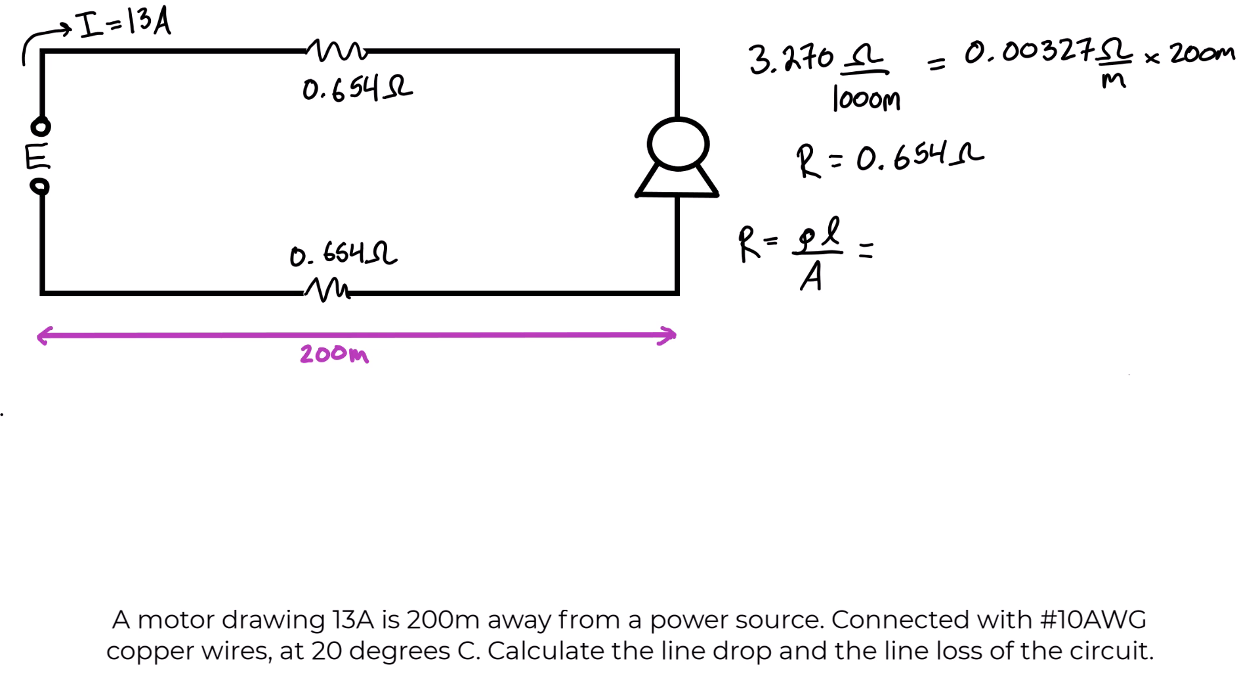Either way, I'll write them out. These are pretty much table values. The resistivity of copper at 20 degrees Celsius is 1.72 times 10 to the negative 8 ohm meters. In this case we'll do 200 meters at a time, so we'll multiply that by 200 meters. We need to divide this by the cross-sectional area, and the cross-sectional area of number 10 AWG is 5.26 millimeters squared, but this needs to be in meters squared. So 5.26 millimeters squared is just 5.26 times 10 to the negative 6 meters squared.